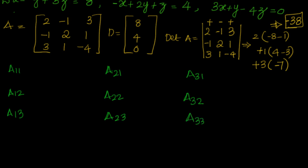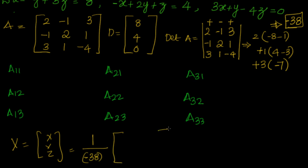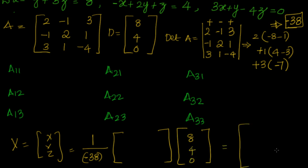After that we write X — that is the column vector [x, y, z] — as equal to 1 over delta of A, which is minus 38, multiplied by the cofactor matrix, multiplied by D, which is [8, 4, 0]. We then read off the values of x, y, and z.